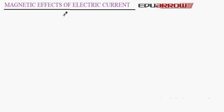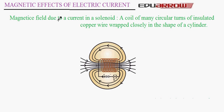Welcome to Eduero Classroom. In this tutorial we will learn more about magnetic effects of electric current. Let's now discuss magnetic field due to a current in a solenoid. A coil of circular turns of insulated copper wire wrapped closely in the shape of a cylinder is known as a solenoid. As you can see, this coiled copper wire in the shape of a cylinder is a solenoid.